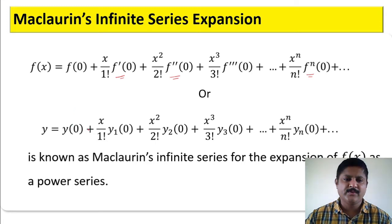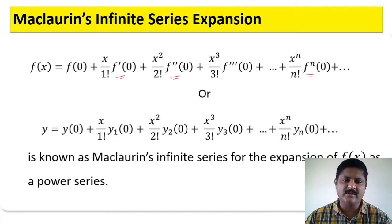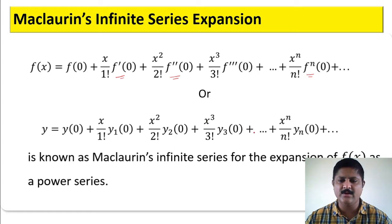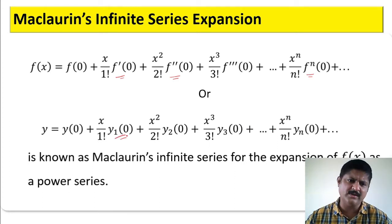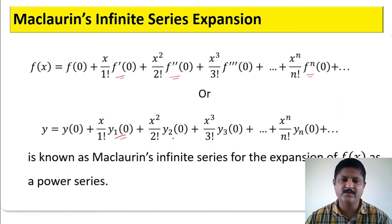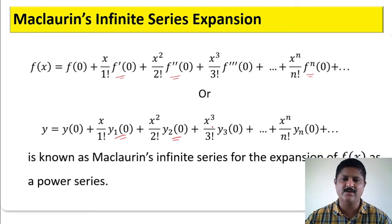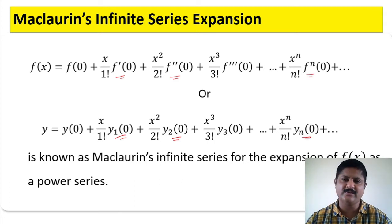Or, y equals y(0) plus x over 1 factorial into y1(0) plus x squared over 2 factorial into y2(0) plus x cubed over 3 factorial into y3(0) plus so on plus x to the power n divided by n factorial into yn(0). Here y1(0) is the first order derivative at x equals 0, y2(0) is the second order derivative at x equals 0, and in general yn(0) is the nth order derivative at x equals 0.